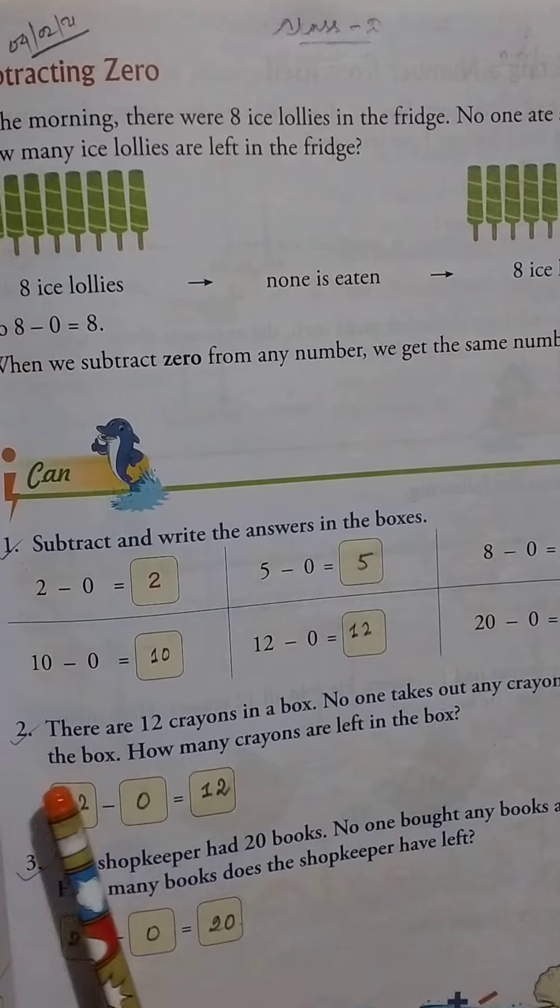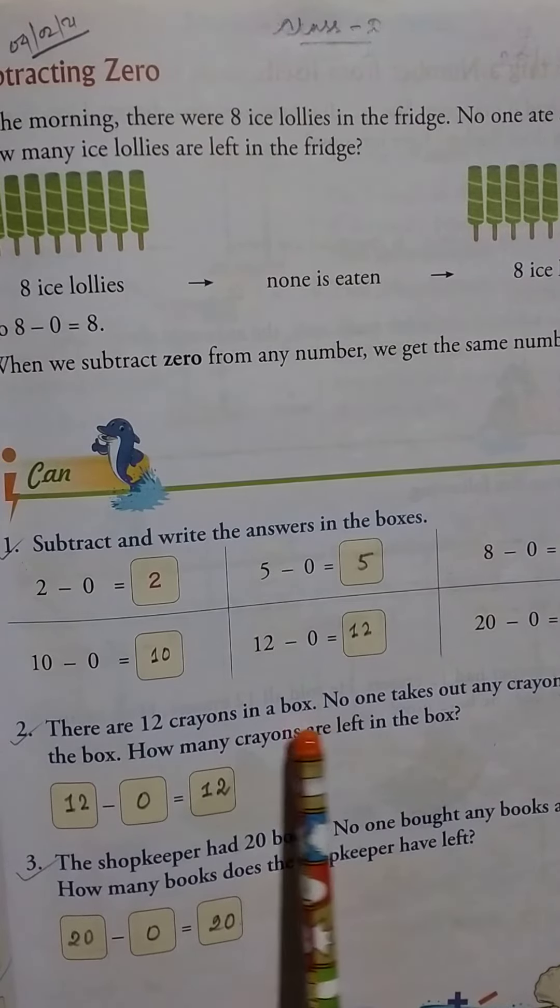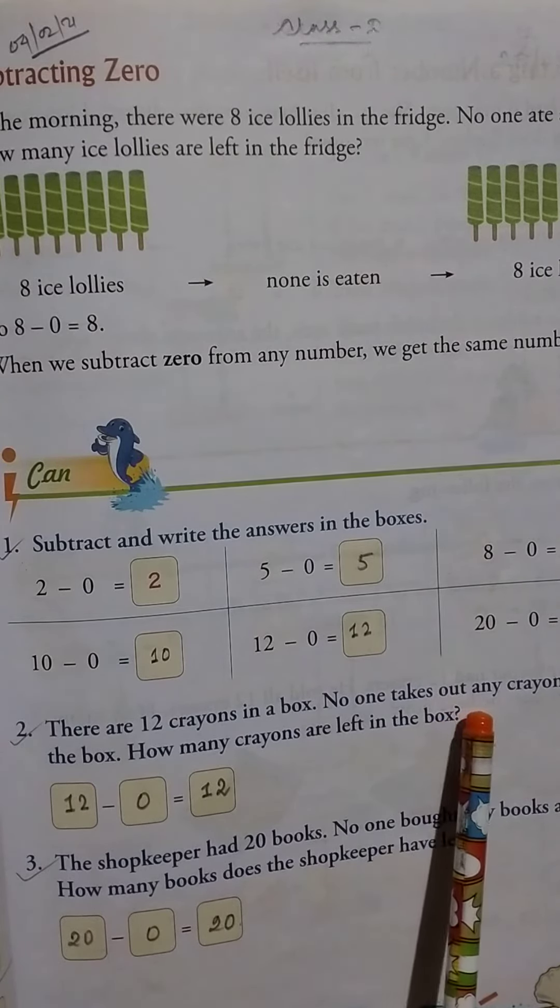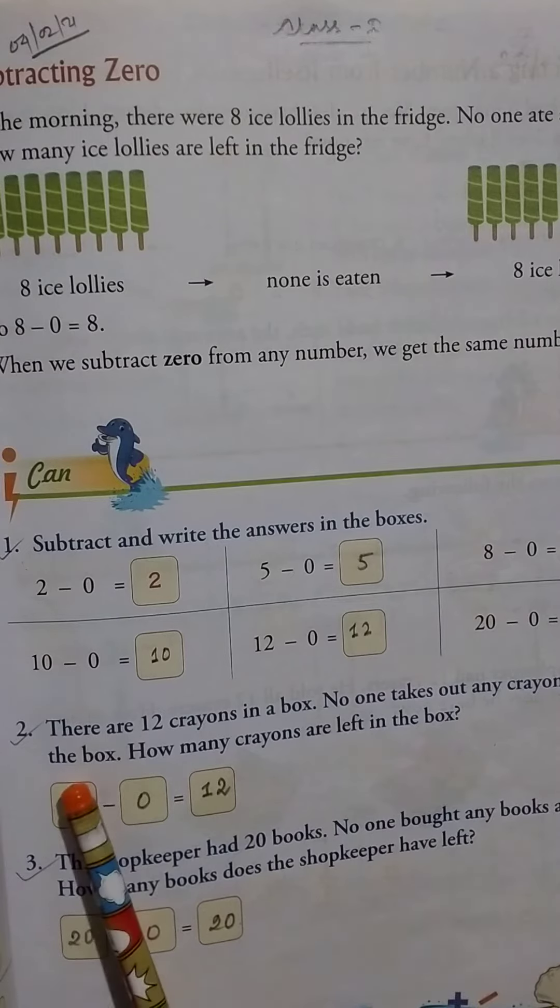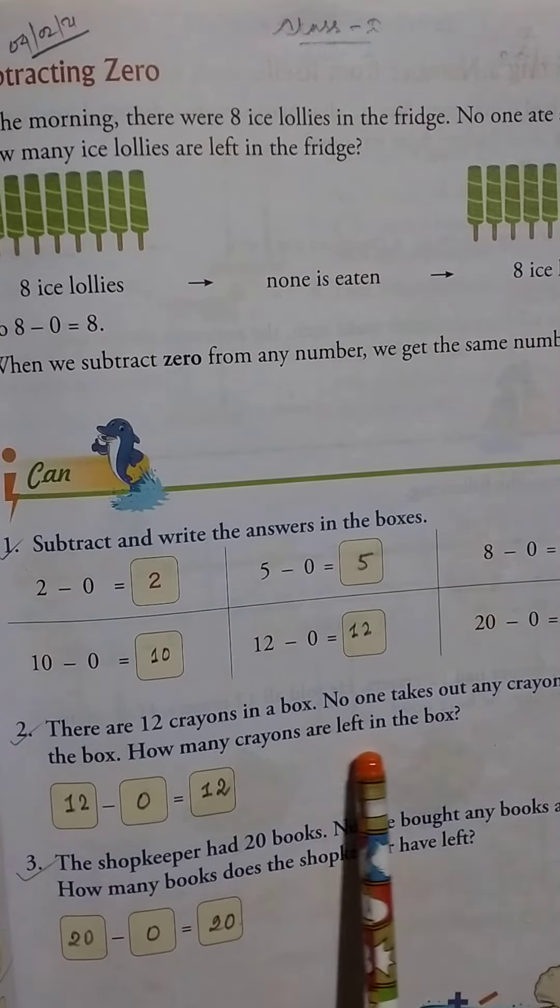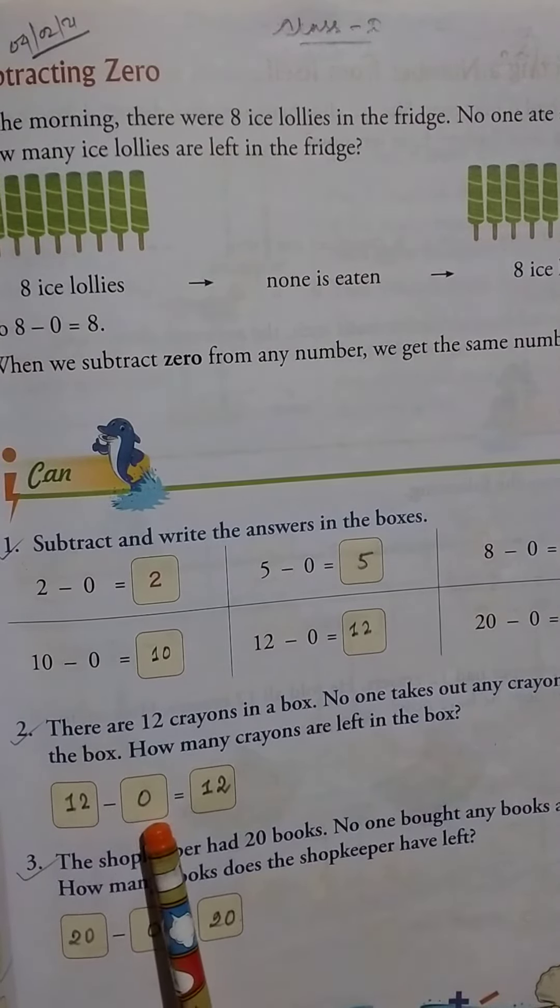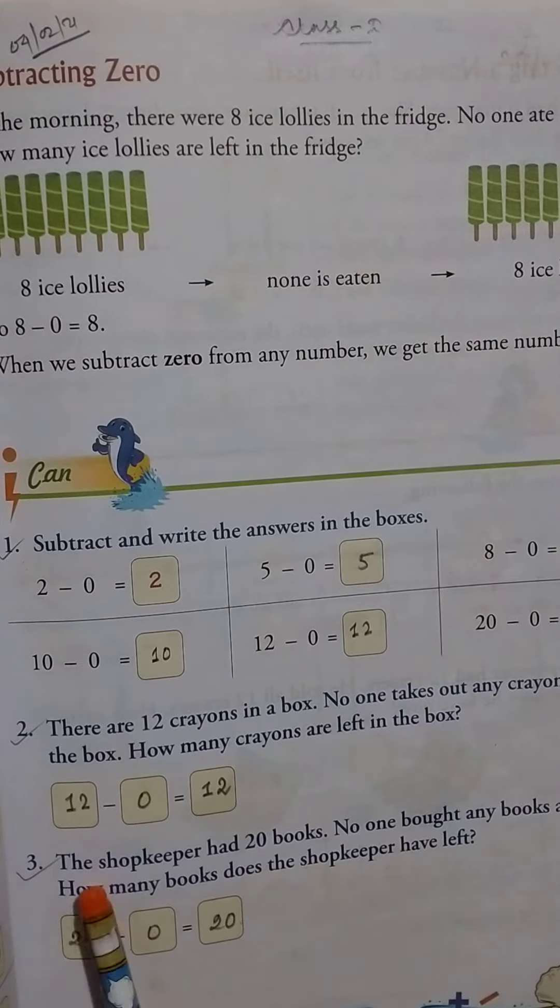Number two: There are twelve crayons in a box. No one takes out any crayons from the box. How many crayons are left in the box? So 12 - 0 = 12.